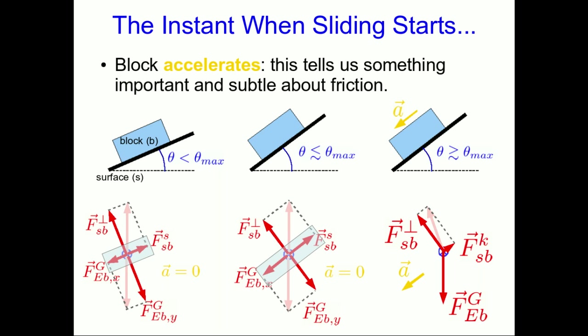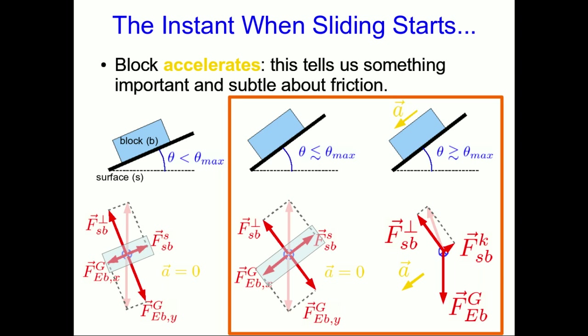Let's return to the block on the slope and now think about the situation as the block starts to slide. We're going to focus on these two situations where the angle of the slope is less than but very similar to theta max, so we're just below the angle at which the block starts to slide. And now in this picture, the angle of the incline is greater than and very similar to theta max.